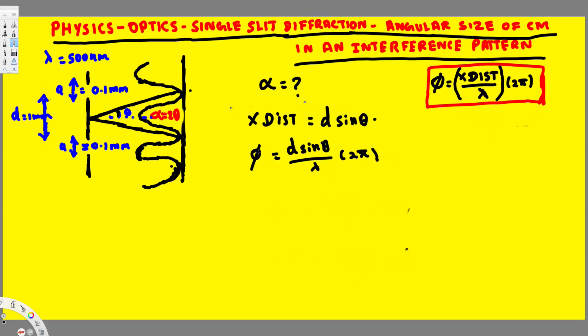Now phase angle is basically the phase difference. Phase difference occurs when we have minimums. So minimum, the difference between the minimum is going to be lambda by 2, half of the wavelength. So this is going to be lambda by 2 is equal to d sine theta over lambda times 2 pi.